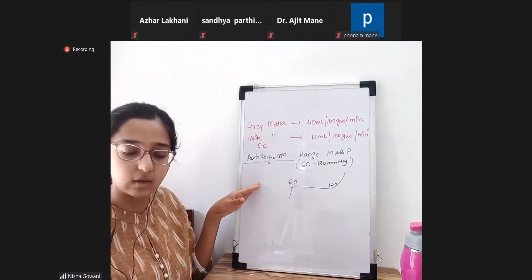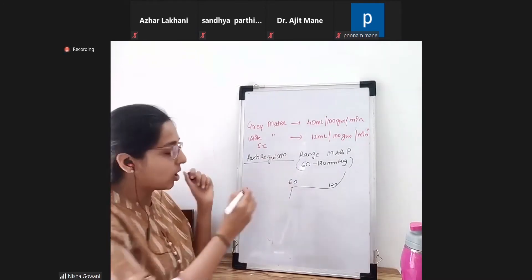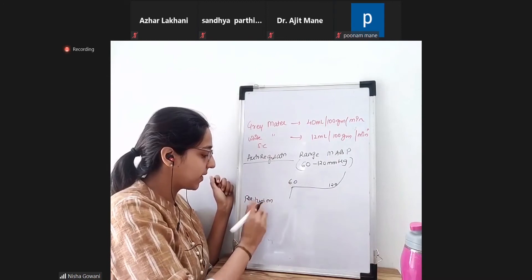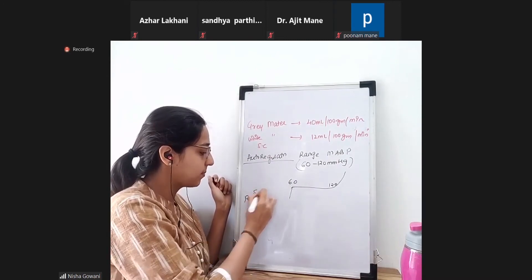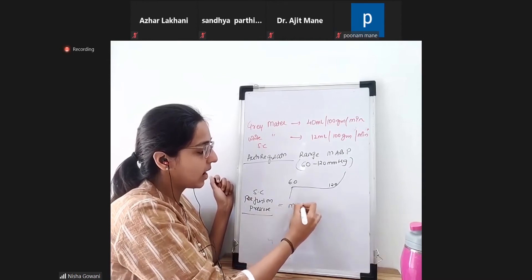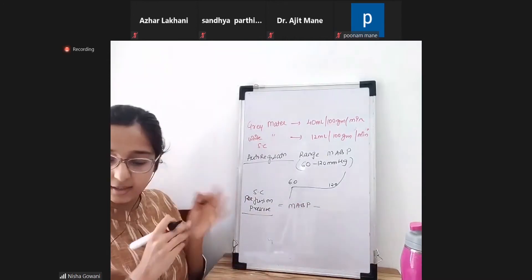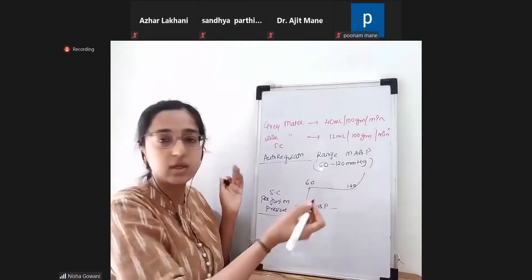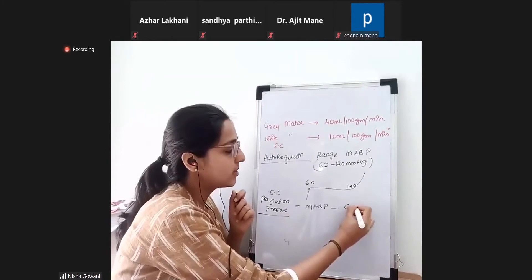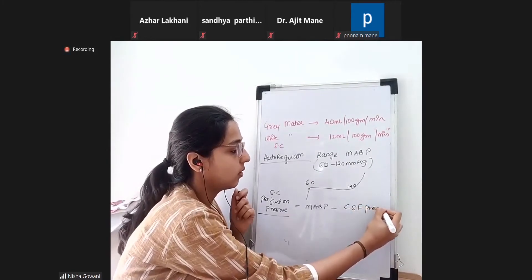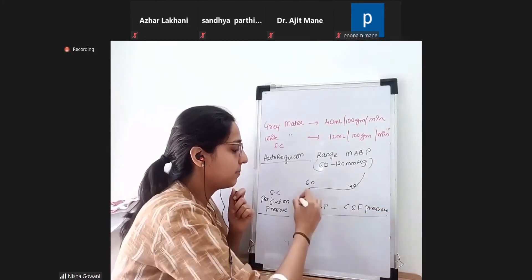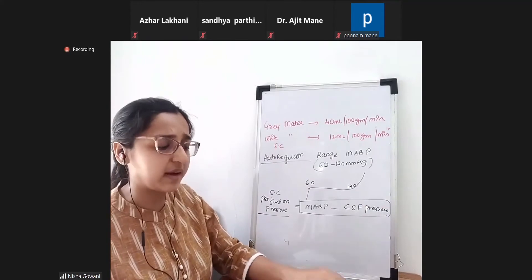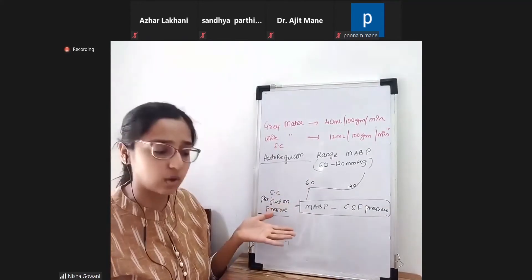If the MAP goes below 60, hypoperfusion will occur, and if it goes above 120, hyperperfusion will occur. Between 60 to 120 the perfusion is constant — this is the range of autoregulation for the spinal cord. The spinal cord perfusion pressure equals mean arterial BP minus CSF pressure.